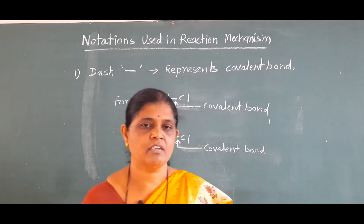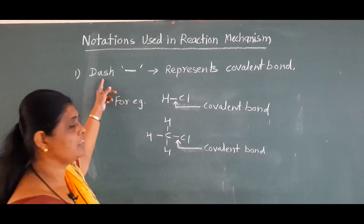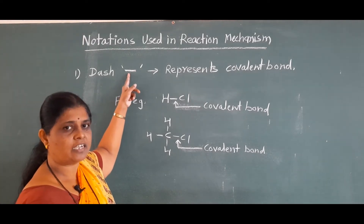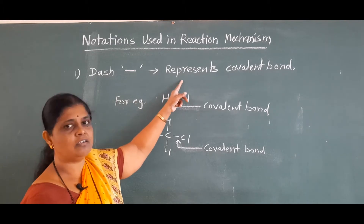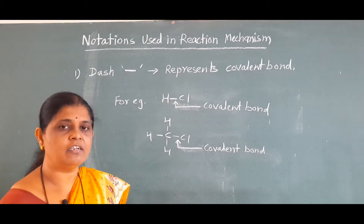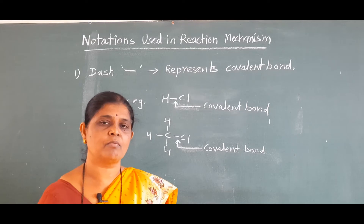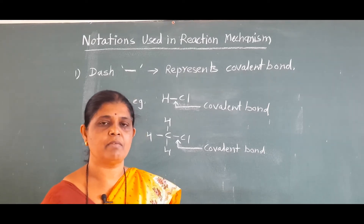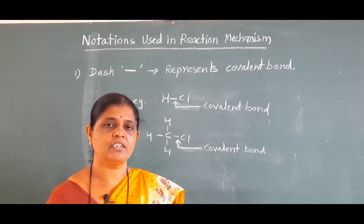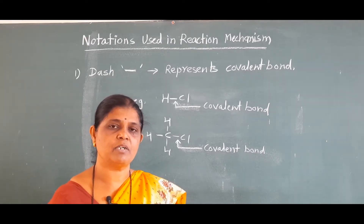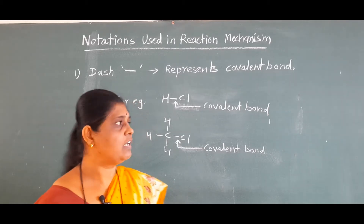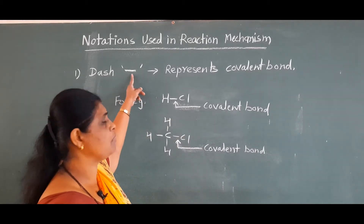First, we see the simple notation — that is the dash. It is represented like this, and that dash represents the covalent bond. We know that the covalent bond is formed by sharing of electrons. Covalent bonds are of two types: sigma bond and pi bond. Both sigma bond and pi bond are covalent bonds, as we see in hybridization lectures.